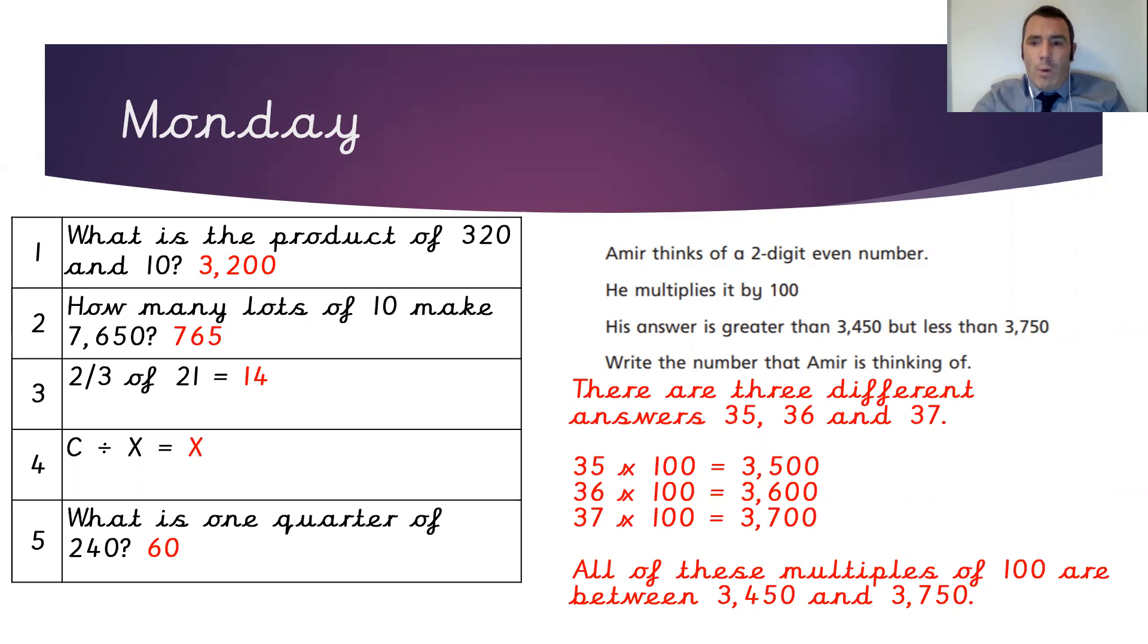When we multiply by 100, all of our digits move two places to the left in their place value. So 35 multiplied by 100 becomes 3,500. 36 multiplied by 100 becomes 3,600. 37 times 100 becomes 3,700. All of these multiples of 100 are between 3,450 and 3,750.